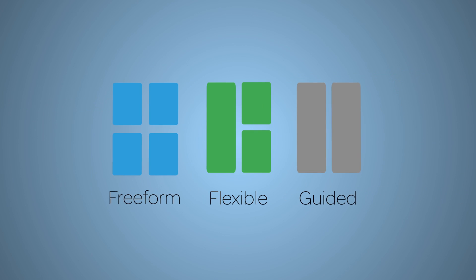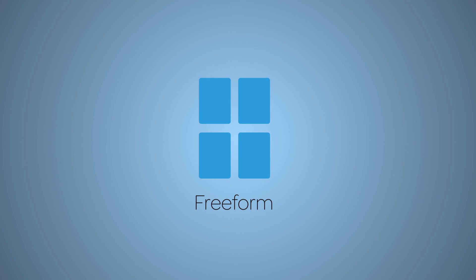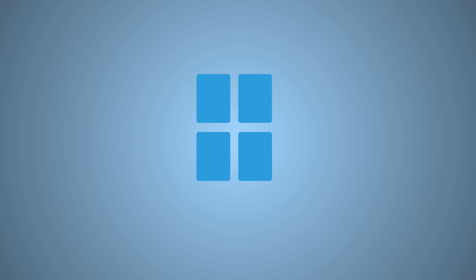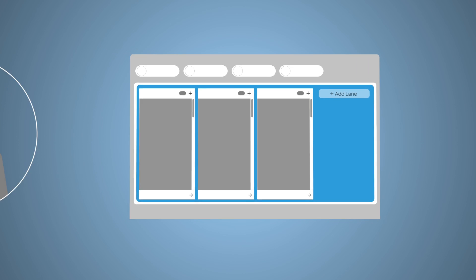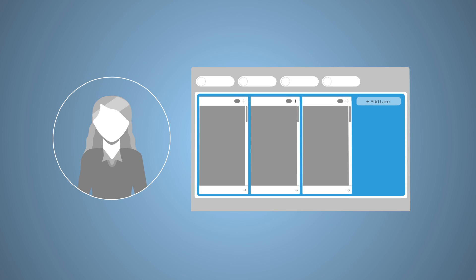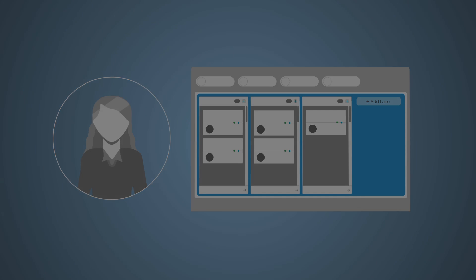Let's look at the three types of VTBs, starting with the freeform board. Freeform boards provide the greatest amount of flexibility. In a freeform board, you can add tasks and organize them by placing them in customizable lanes that you create — in other words, anything goes.